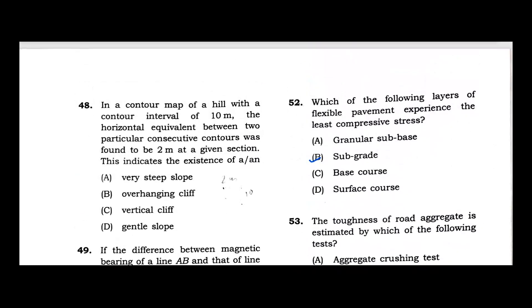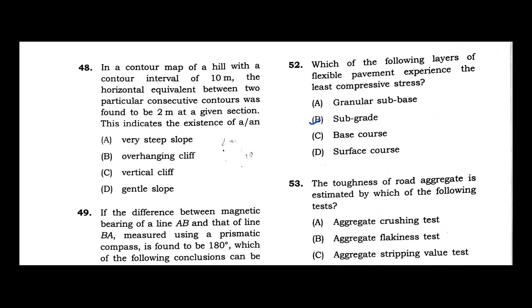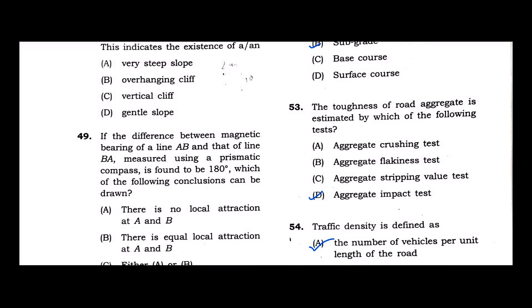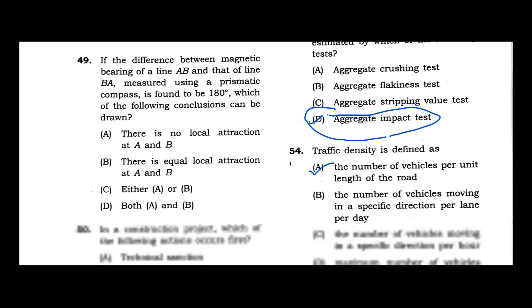Question 52: Which of the following layers of flexible pavement experiences the least compressive stress? Obviously wearing course or surface course, but the topmost layer is not correct. The lowest layer, the subgrade layer, experiences less compressive stress. Option B is correct. Question 53: Toughness of a road aggregate is estimated by aggregate impact test. Question 54: Traffic density means the number of vehicles per unit length of the road. Option A is correct.